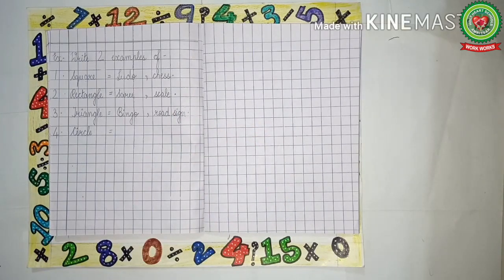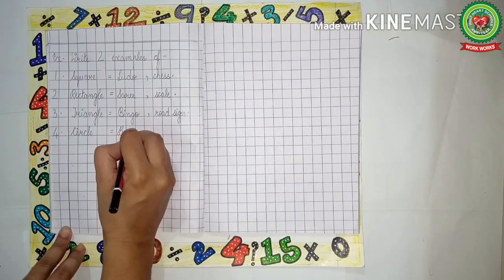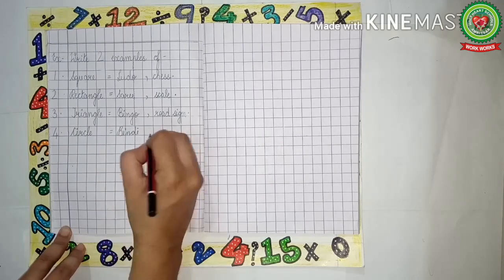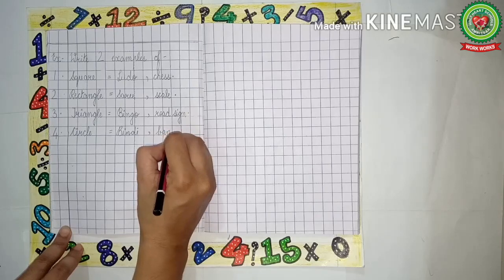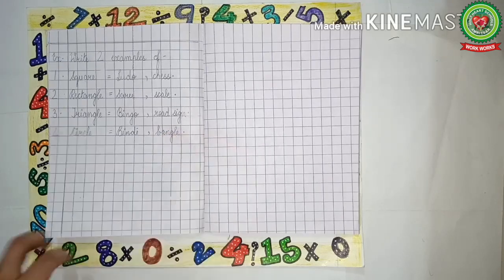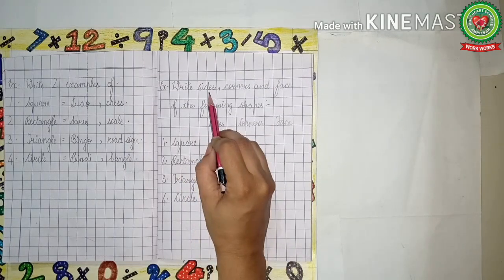Number four is circle. What are the two examples of circle? Bindi — B-I-N-D-I — comma, bangle — B-A-N-G-L-E. Now the next exercise is: write sides, corners, and face of the following shapes.